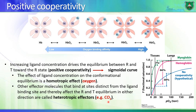Cooperativity is really important because without it, if oxygen pressure drops from 100 to about 20, the amount of oxygen released would be less than with an allosteric cooperative protein. This is the advantage of hemoglobin being an allosteric protein with cooperativity.